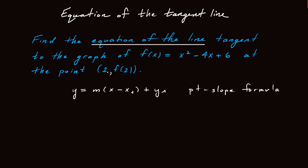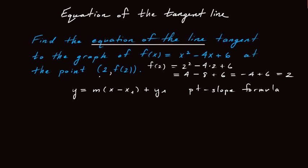The point is already here — it's 2 comma f of 2. We need to figure out what f of 2 is, so we plug that into the original formula. f of x equals x squared minus 4x plus 6. We plug in x equals 2: we get 2 squared minus 4 times 2 plus 6, which is 4 minus 8 plus 6, which is minus 4 plus 6, which is 2. So the point is 2 comma 2, and that's what's going to be our x1 and y1.